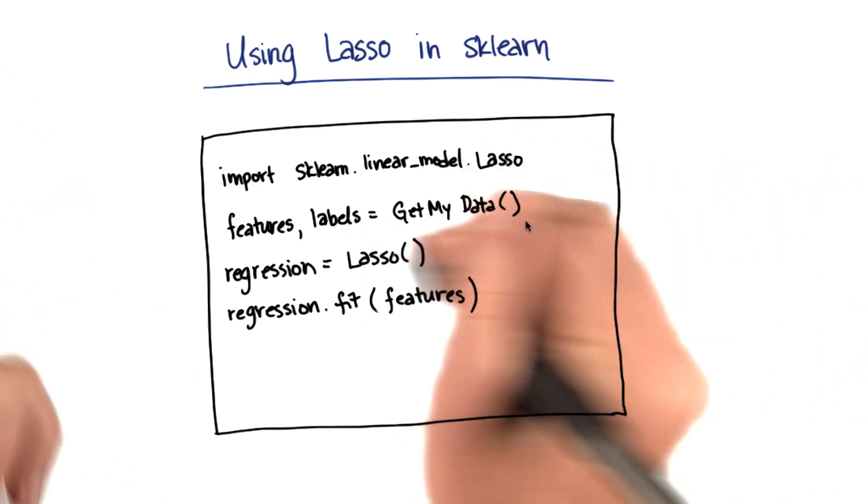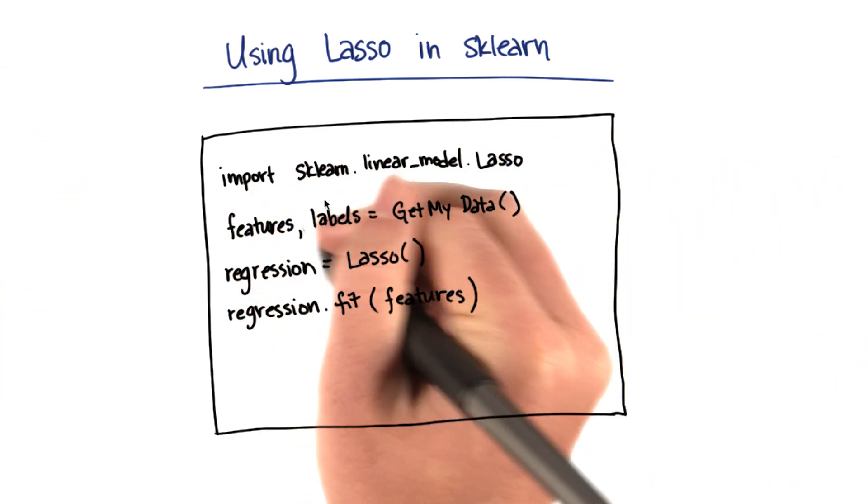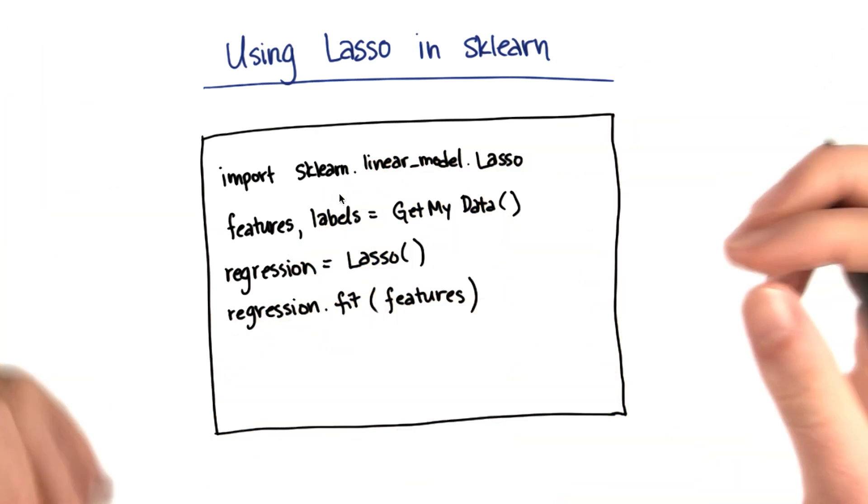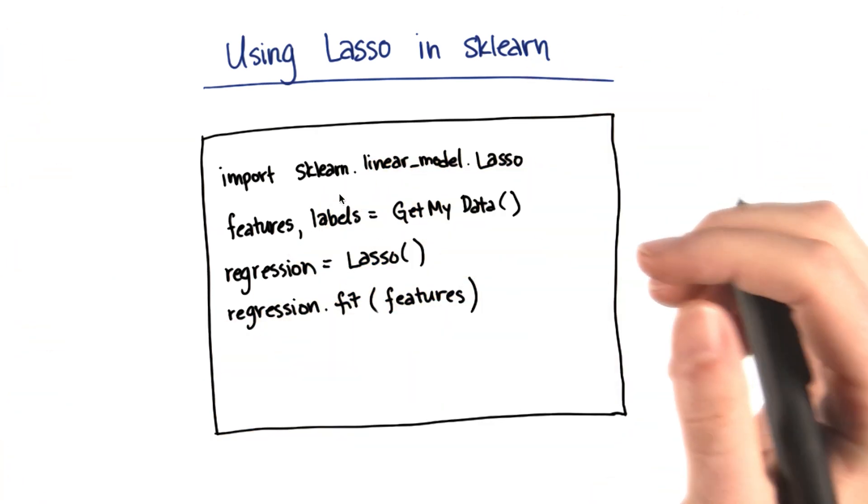So this is going to return two different lists. One of them contains all the features. The other one contains all the target values, the things that I'm trying to find using my regression.